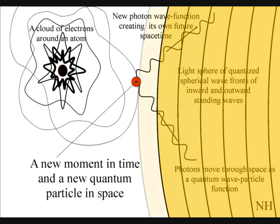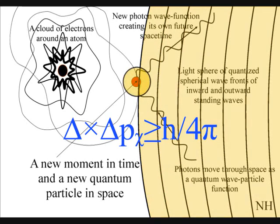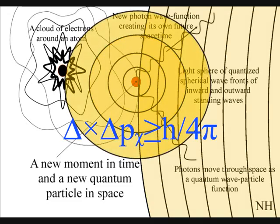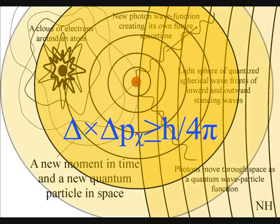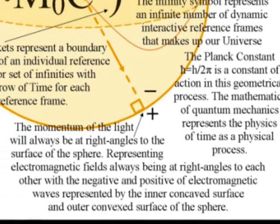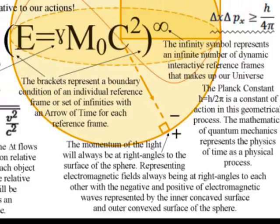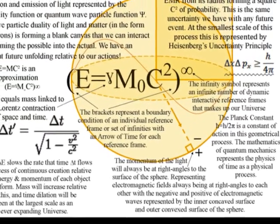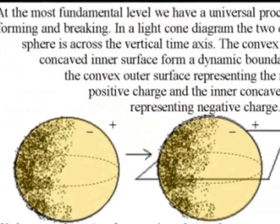When this happens, the future unfolds photon by photon, with each new photon-electron coupling, or dipole moment. This process forms a movement of charge, with positive and negative charge, forming a dynamic boundary condition, with the continuous flow of electromagnetic fields in three-dimensional space.